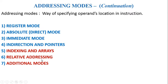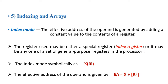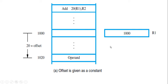In this video, we will discuss indexing and arrays. In indexing, the effective address of the operand is generated by adding a constant value to the contents of a register. Usually general purpose registers are used, but sometimes special registers called index registers are used. This mode is represented in instructions using notation like X inside parentheses with a register name.